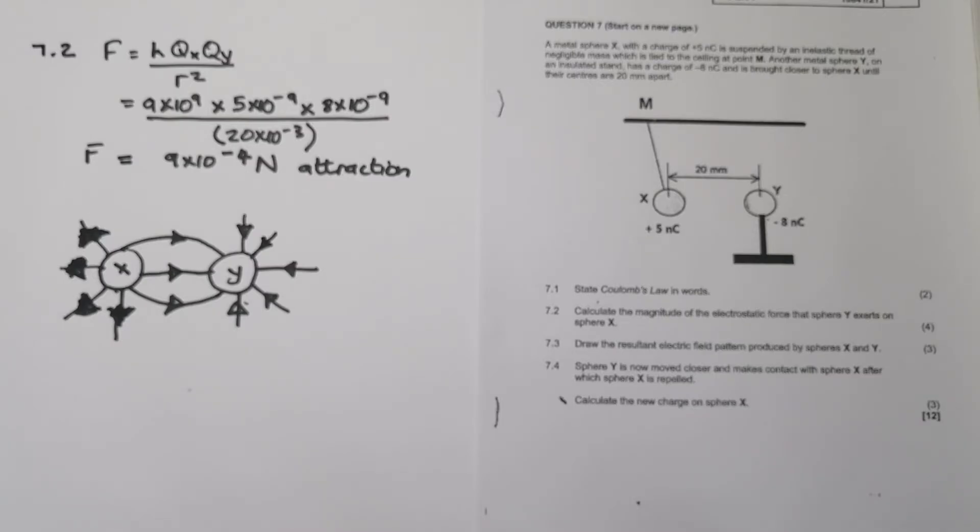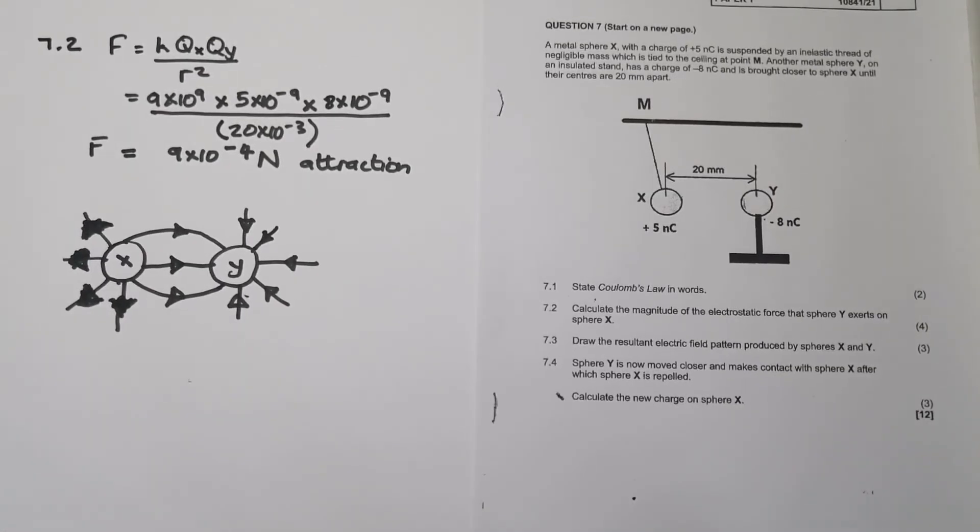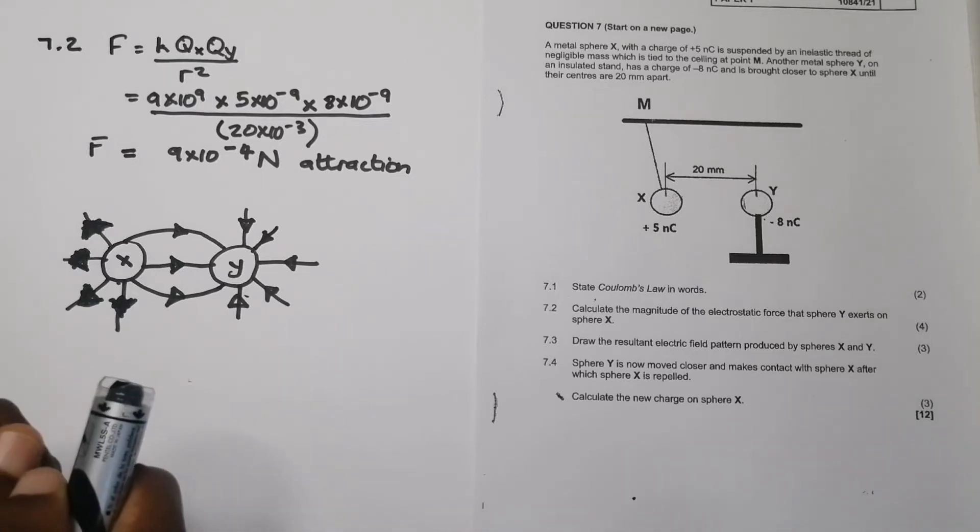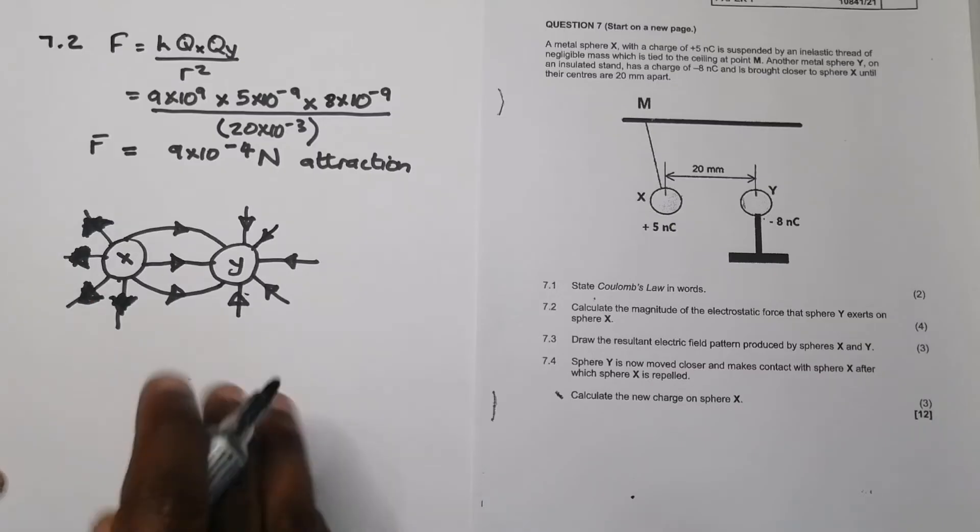So the last question, they say sphere Y is now moved closer and makes contact with sphere X, after which sphere X is repelled. They say calculate the new charge on sphere X. Now, please remember, ladies and gents, whenever we take point charges and they are brought together closer and caused to touch and thereafter they are separated, what happens is that there's a transfer of charges that takes place. So what would be the net charge? What would be their charge after they touch?